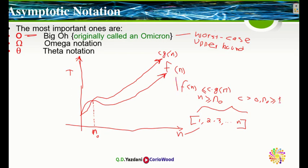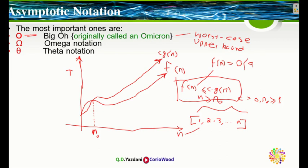If we satisfy this condition — that f(n) is less than or equal to c*g(n) for n greater than or equal to n naught — then we say that f(n) is equal to Big O of g(n). Another way to interpret this: f(n) is smaller than or equal to g(n) in Big O terms.